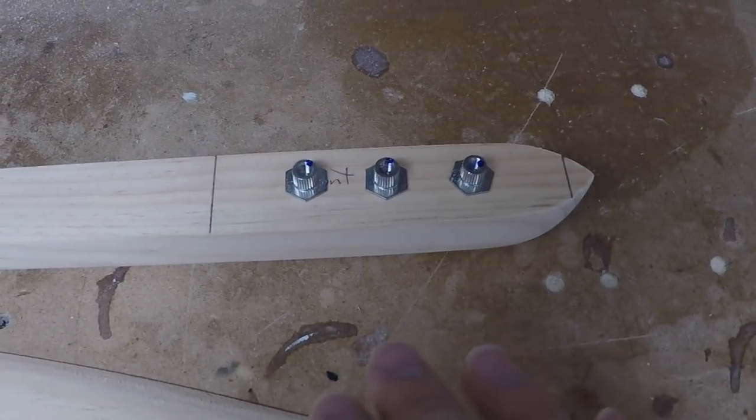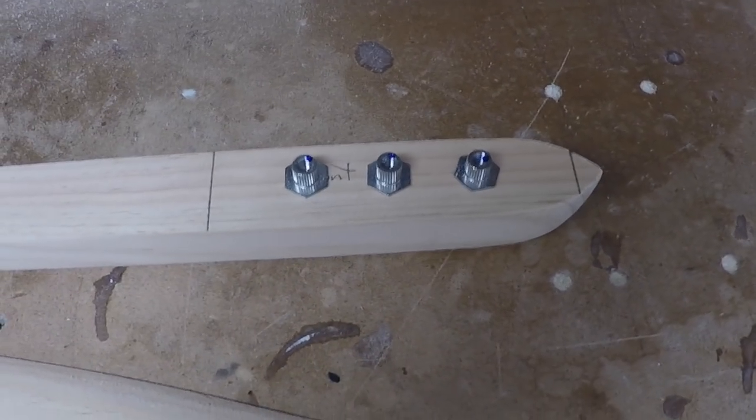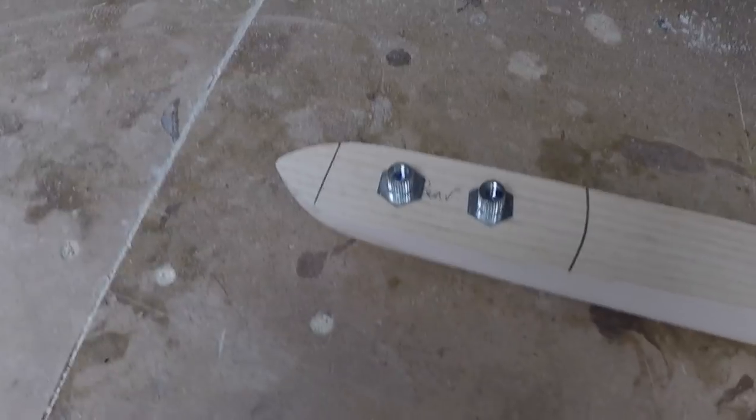So in short, what we're doing here is we're going to epoxy these three inserts into the front and then these two into the back of the fuselage.